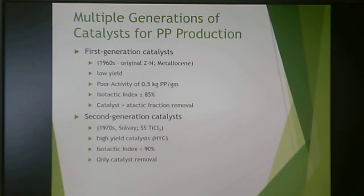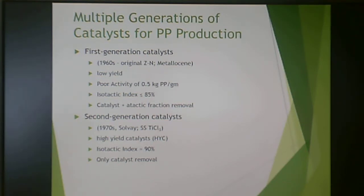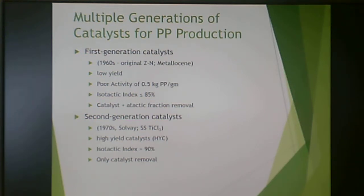There were multiple generations of catalysis for polypropylene to make it successful, efficient, with really good isotacticity and low atactic fraction. The first generation was the Ziegler-Natta catalyst. It was successful, but it got low yield, and the isotactic index was less than 85.